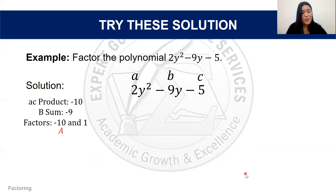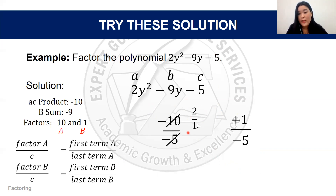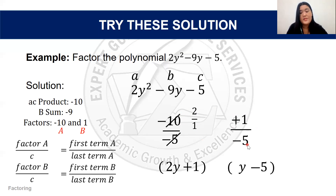Using technique two for the same problem: factors are -10 and +1, divided by c = -5. For -10 ÷ (-5) = 2, written as 2/1. For +1 ÷ (-5), this cannot be simplified further: written as 1/(-5) or 1 over -5. So the first factor is (2y + 1) and the second factor is (y - 5) — the same answer as before.